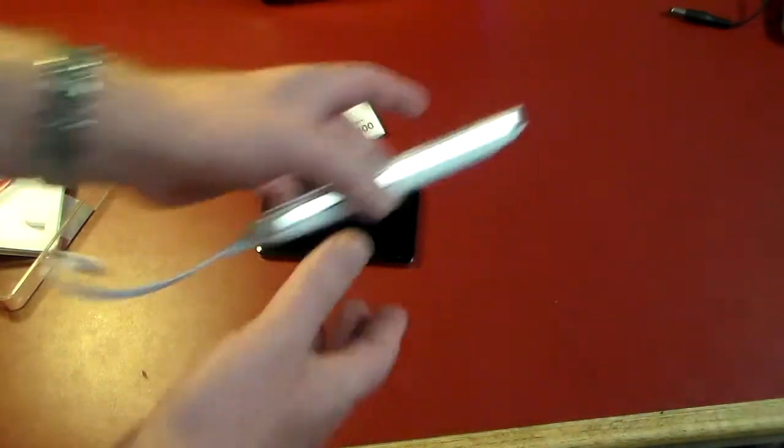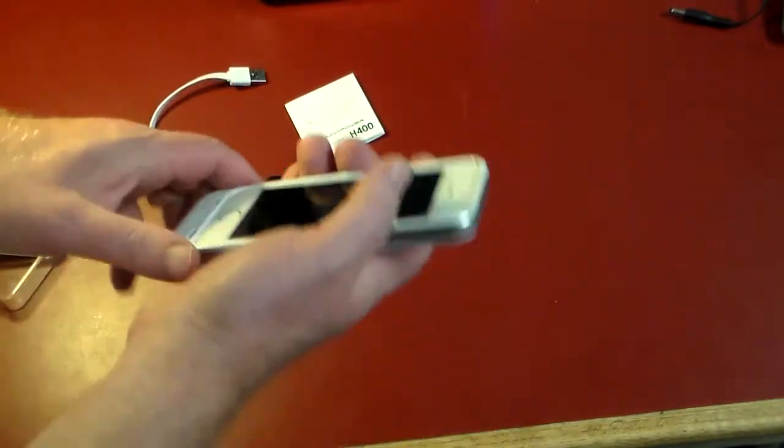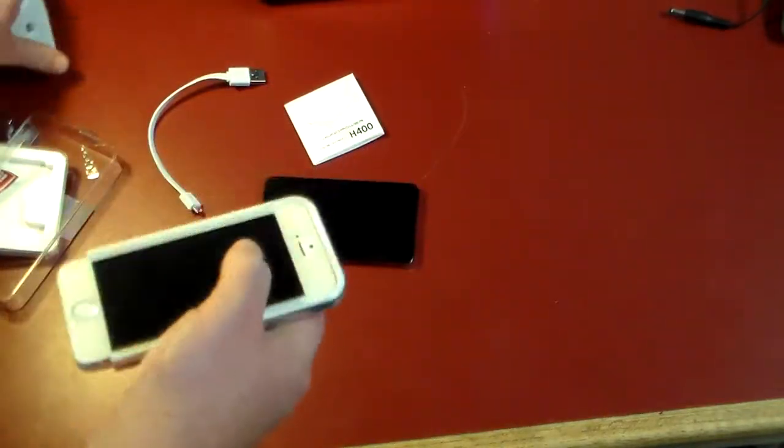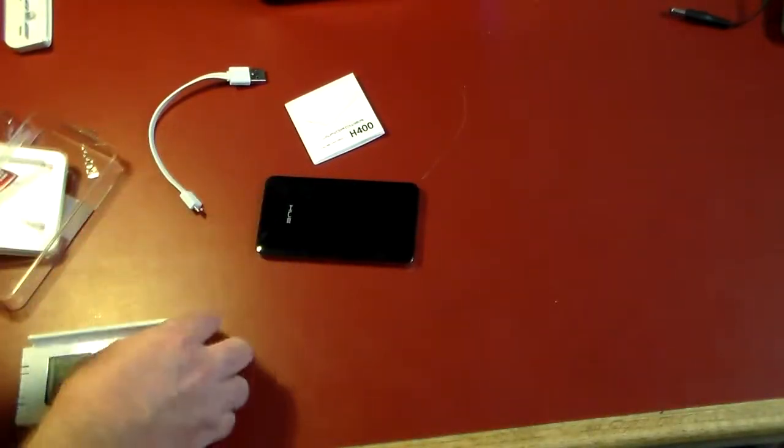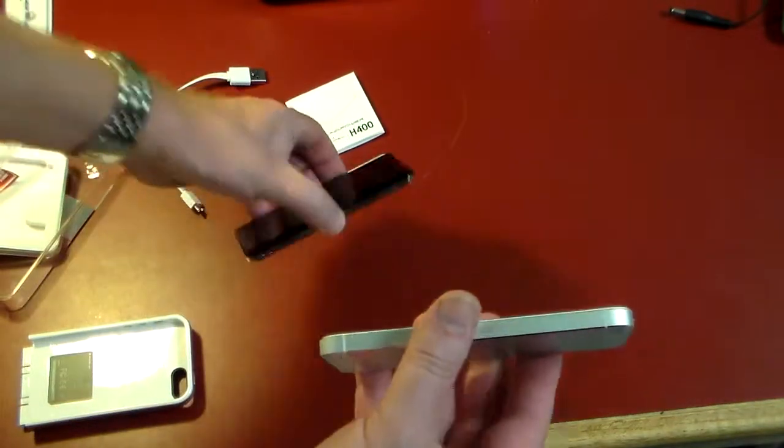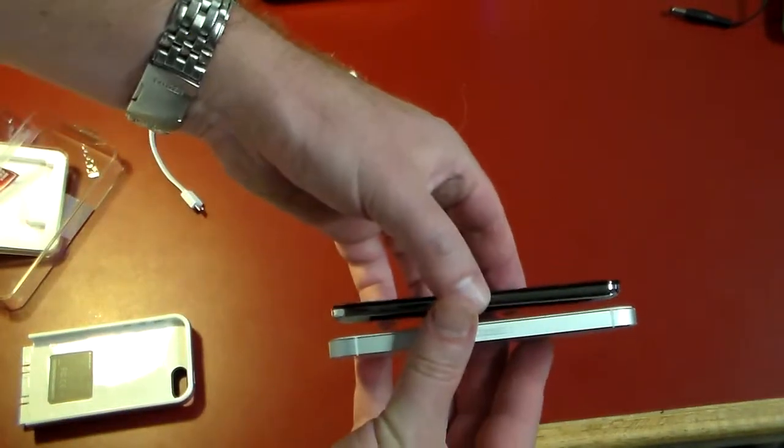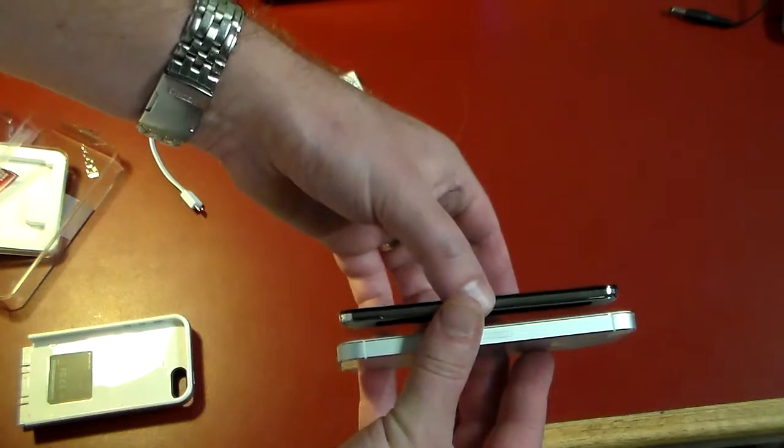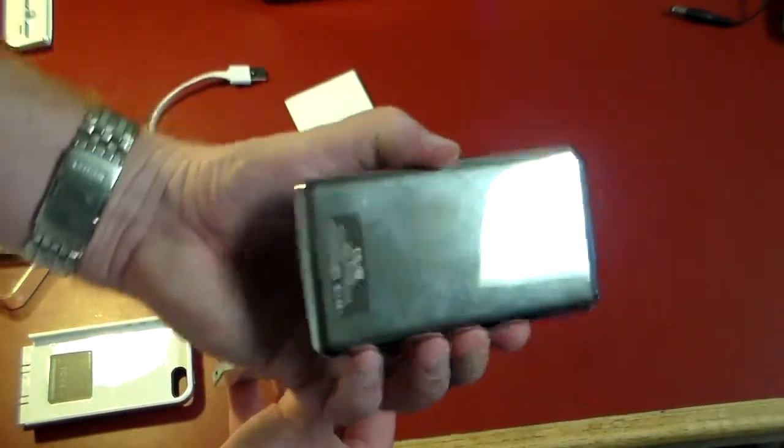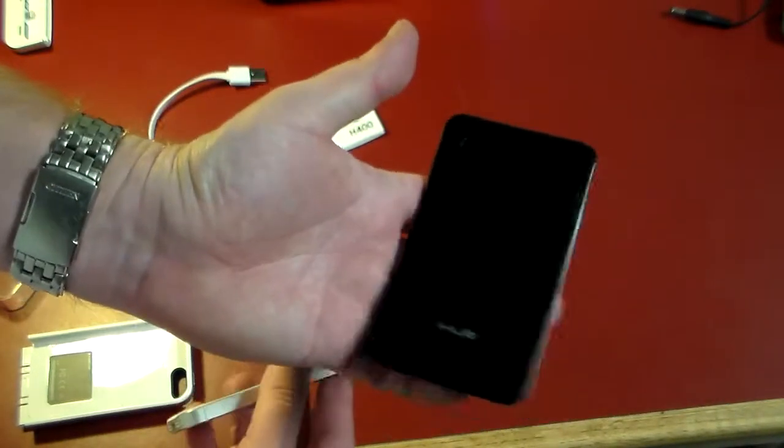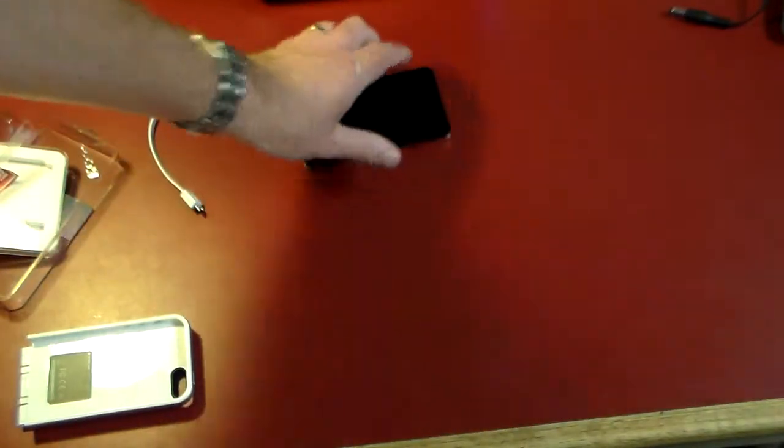Let me get the iPhone out of the Mophie case and give a little comparison. Here's the iPhone 5S, here's the Hue charger - 4000 milliamps packed into this little guy. Very cool gadget, very cool.